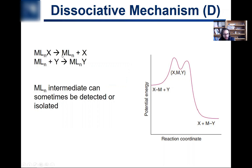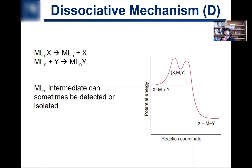In the D-mechanism, the leaving group leaves first. The X ligand leaves, the coordination number of your complex goes down by one, and then the Y ligand reacts to give your substituted complex. Depending upon the specifics of the reaction, you can actually isolate this lower coordination geometry complex.